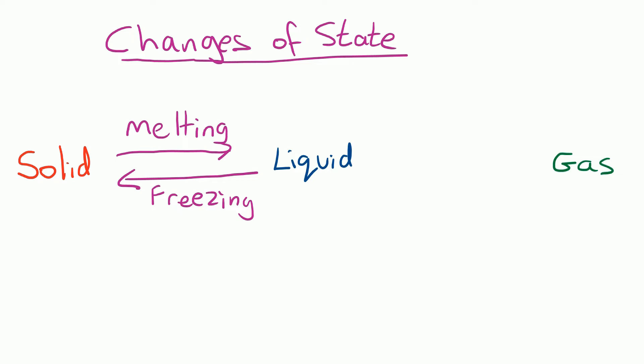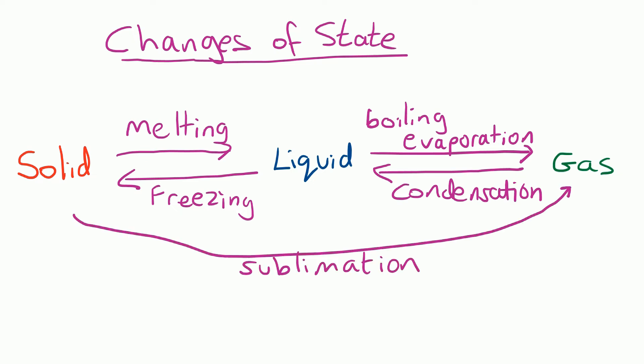A liquid changing into a gas could be either boiling or evaporation, and going the other way from a gas to a liquid, that's called condensation. Now a few substances can change straight from a solid to a gas. One example is carbon dioxide, and that's used in smoke machines in the theater. It goes straight from a solid to the gas which is the smoke you can see, and that is called sublimation. If something goes the other way from a gas straight into a solid, for example water vapor can be turned into snow at the right temperature, then that's called deposition.